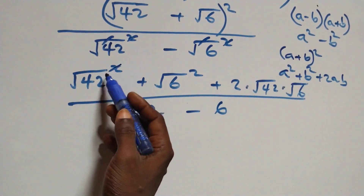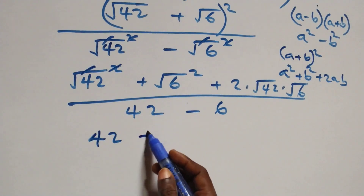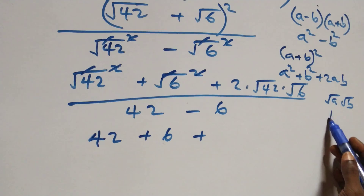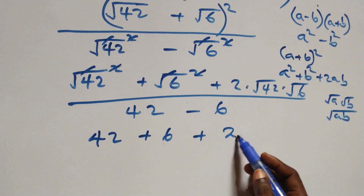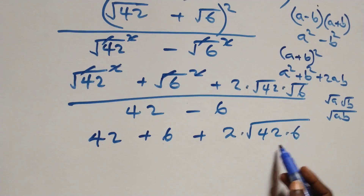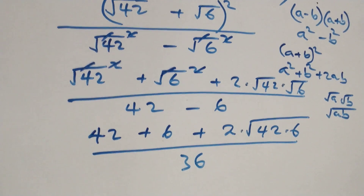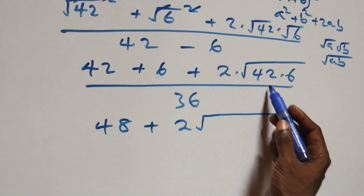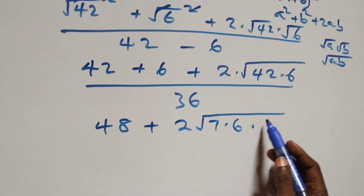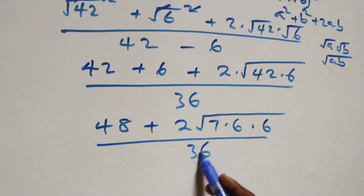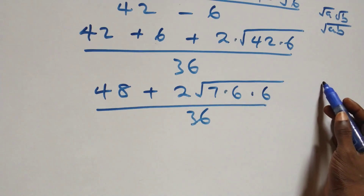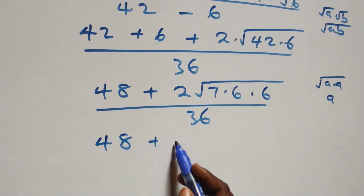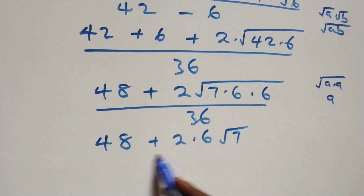Simplifying the numerator: 42 + 6 = 48, and 2×√(42×6) = 2×√252. We can write 42 as 7×6, so √(7×6×6) = 6√7. This gives 48 + 2×6×√7 = 48 + 12√7, all over 36.